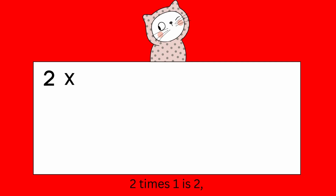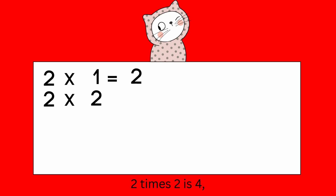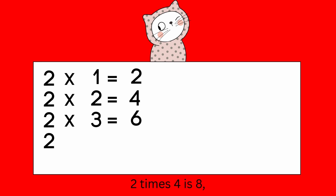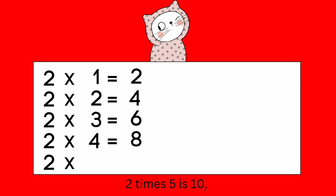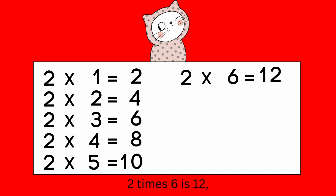Two times one is two. Two times two is four. Two times three is six. Two times four is eight. Two times five is ten. Two times six is twelve.